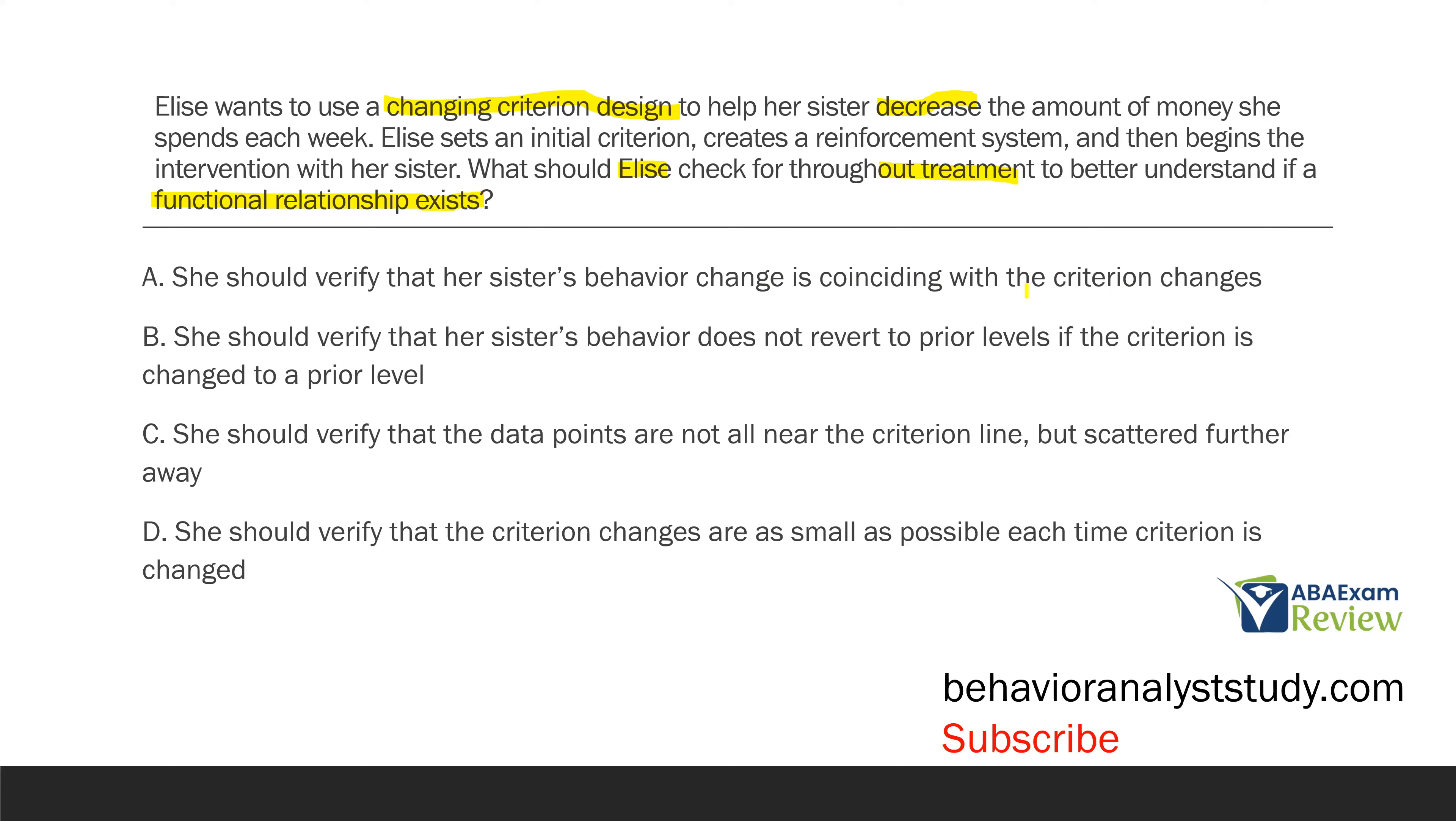Now, do we pick A and move on? No, we read every single answer choice every time. B: she should verify that her sister's behavior does not revert to prior levels if the criterion is changed to a prior level. What is that saying? That's saying if we go from 100 to 90 and then back to 100, B is saying the behavior should follow the change. We know that's not true. The functional relationship says that behavior will follow the change regardless of what direction it moves. So, B is false. C: she should verify that the data points are not all near the criterion line but scattered further away. Is that true? Well, no. We want the data as close as possible to the criterion line because that means the criterion is where the behavior is and it's controlling the behavior. If my criterion is 80, I want the sister spending $80 or as close to $80 as possible during that criterion change. C is false.